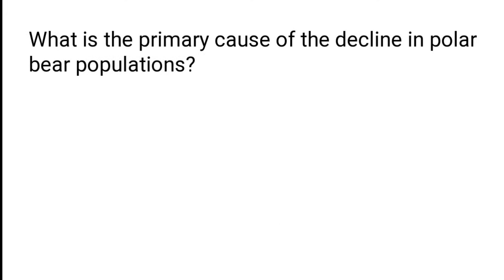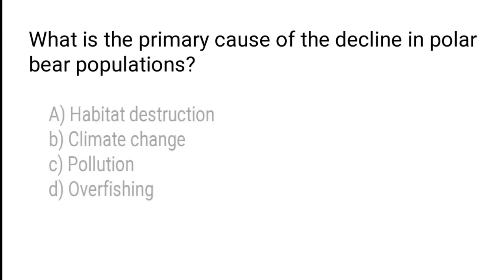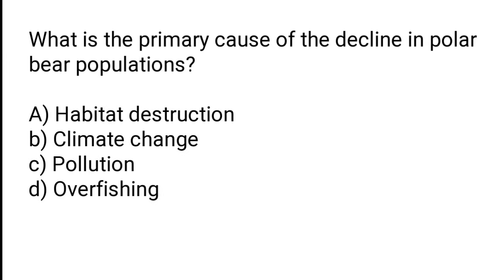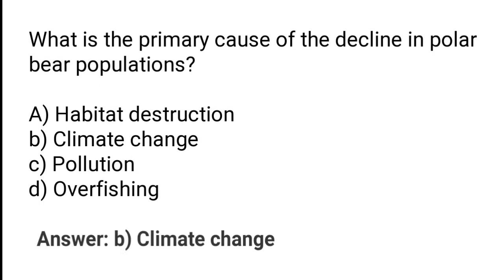What is the primary cause of the decline in polar bear populations? A) Habitat destruction, B) Climate change, C) Pollution, D) Overfishing. The correct answer is option B — climate change is the primary cause of the decline in polar bear populations.